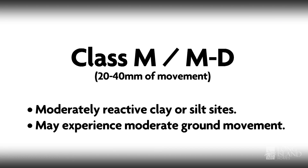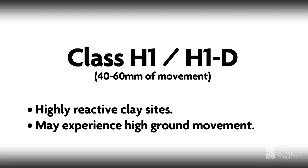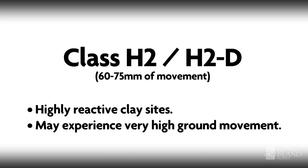Let's look at the classifications as per the Australian Standard AS2870. In class M or MD, which is 20 to 40 millimetres of movement, these are classified as moderately reactive clay or silt sites and may experience moderate ground movement as a result of soil conditions and moisture changes. In class H1 and H1D there are 40 to 60 millimetres of movement — these are highly reactive clay sites. In class H2 and H2D there is 60 to 75 millimetres of movement — these are highly reactive clay sites that may experience very high ground movement.